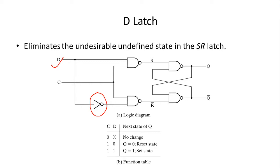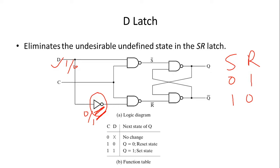We now call it the D input — D is for data. We know there were two inputs, set and reset, which were 0-1 and 1-0 for the reset and set states. So now if D is 1, S would be 1 and R would be 0 because of the NOT gate. If D is 0, then S is 0 and R is 1. This NOT gate helps achieve the same functionality of SR latches while avoiding the unwanted inputs 0-0 or 1-1.